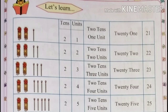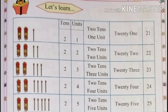Two bunches of math sticks means 20 math sticks. With 4 math sticks: 24. That is 2 tens and 4 units — 24. The spelling of 24 is T-W-E-N-T-Y (20) F-O-U-R (4): 24.